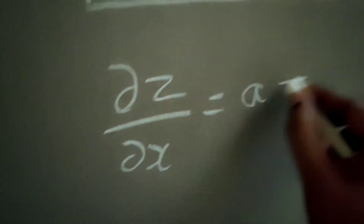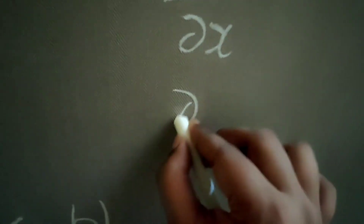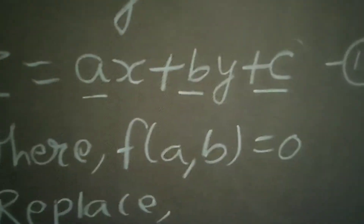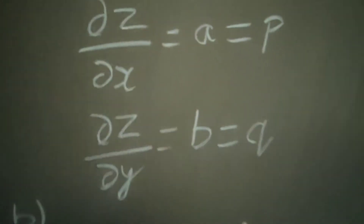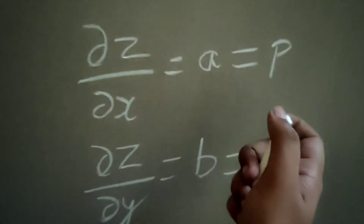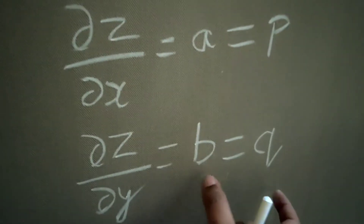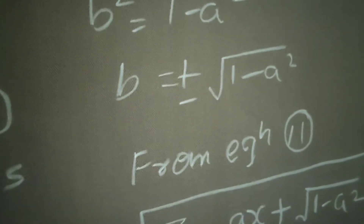Differentiating z = ax + by + c with respect to x gives a, and as I told you, that equals p. Similarly, performing partial differentiation with respect to y: the x term and constant are treated as constant, so you get b, which equals q. This is the reason why we replace p by a and q by b — so that we can express a in terms of b or b in terms of a.